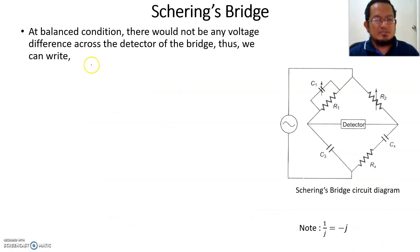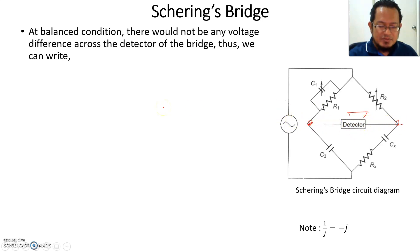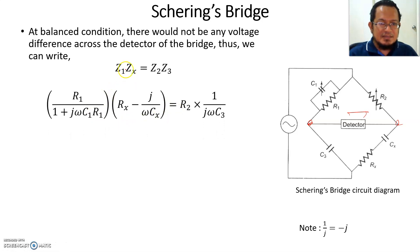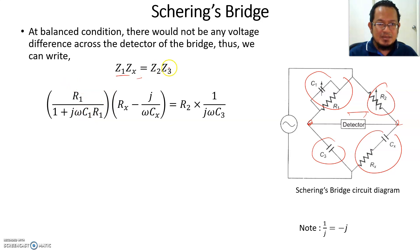At the balance condition for any AC or DC bridge, there will be no voltage difference across the detector — no current flows and the voltage between the two points is equal. We can therefore state that the opposite impedances satisfy: Z1 multiplied by ZX equals Z3 multiplied by Z2.